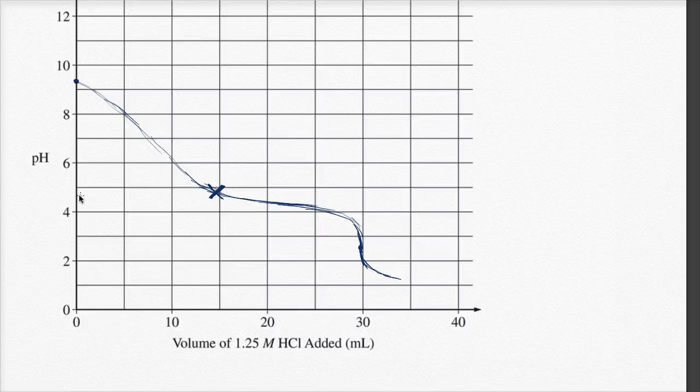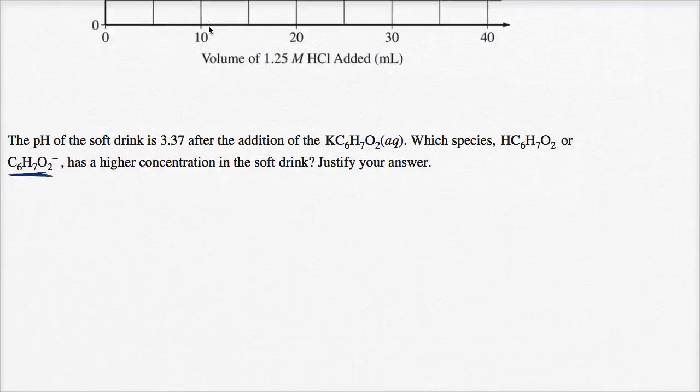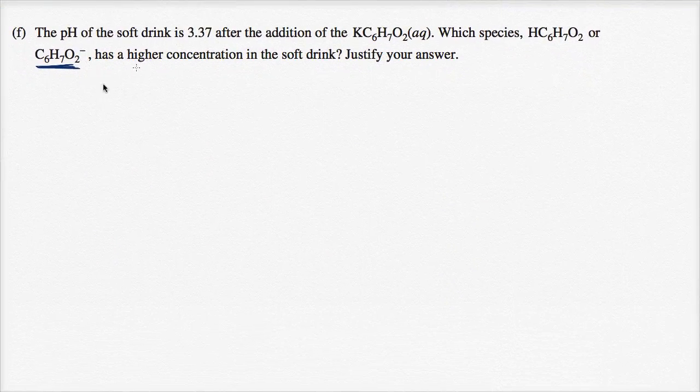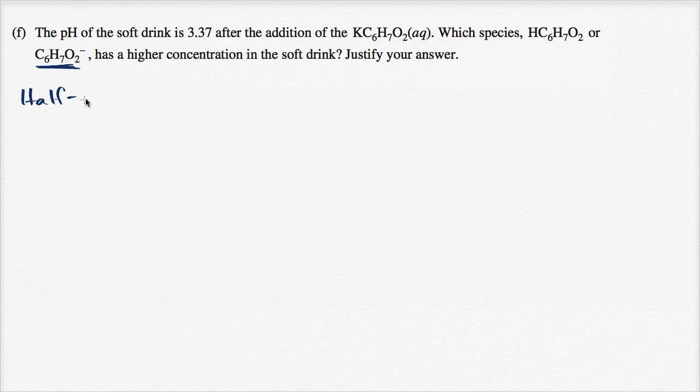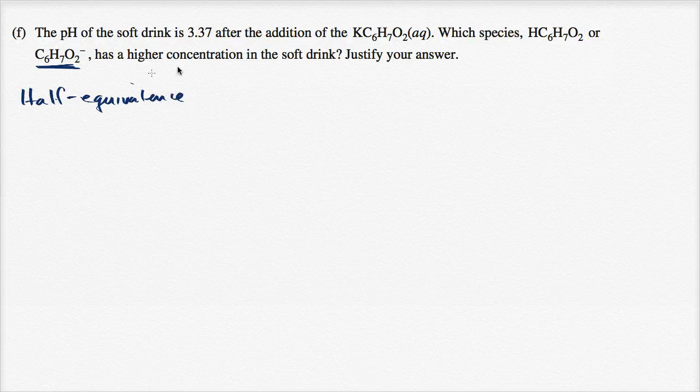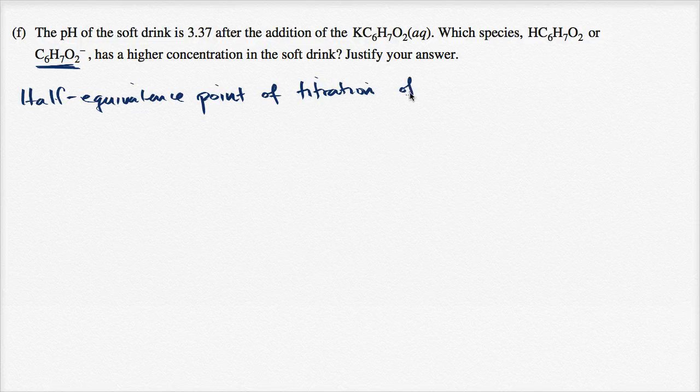We marked that out when we figured it out in the last few parts of this problem. And the half-equivalence point happened at a pH of 4.77. So we could say half-equivalence point of titration of potassium sorbate...